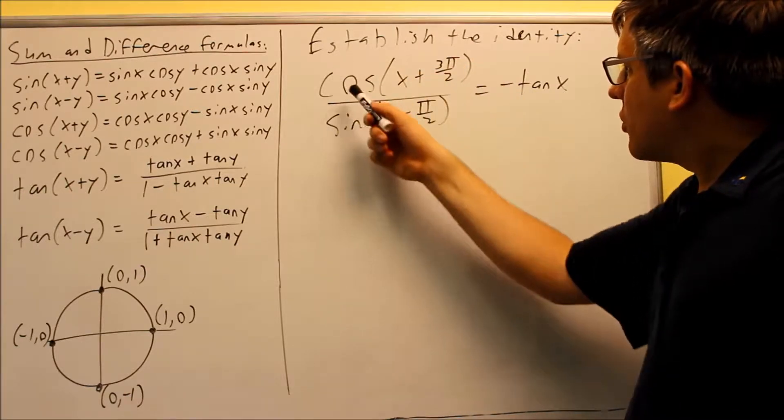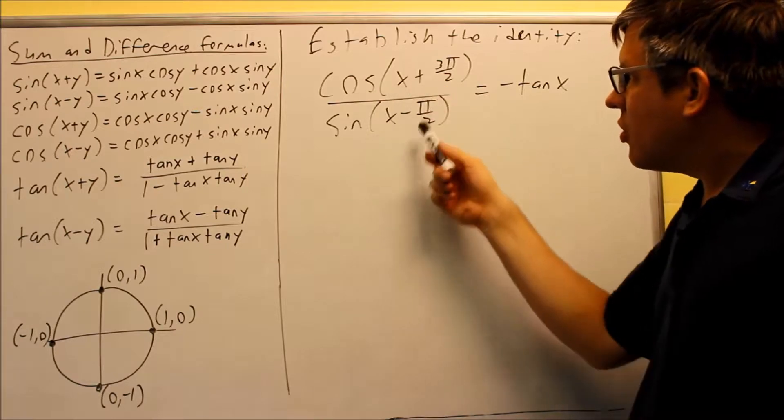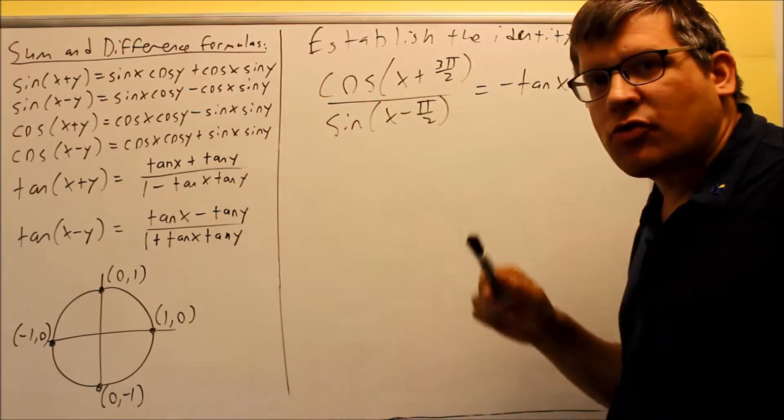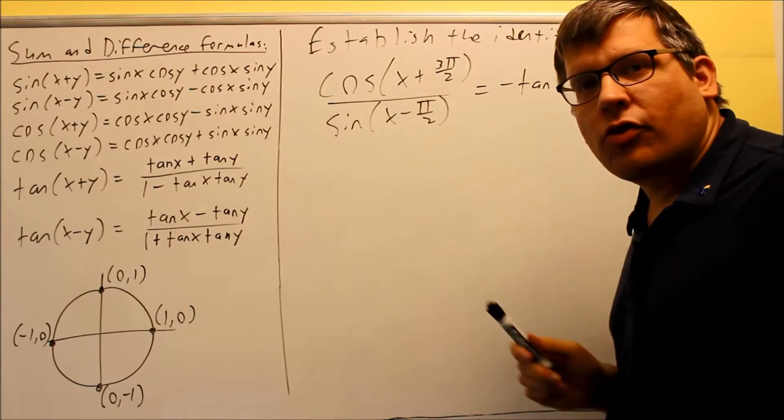In this case, what I need to do first is simplify the top and bottom ones. Now each of these, what I need to do is I'm going to use a sum and difference formula separately for each one, one for the top one and also one for the bottom one.